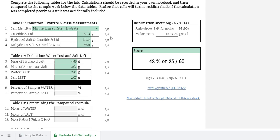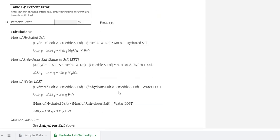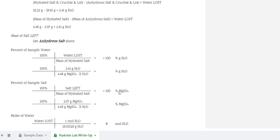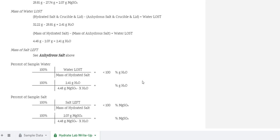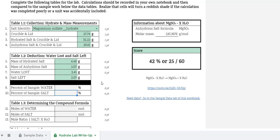This is part two of our hydrate lab. We're going to do the percent composition portion. We're going to use the total amount of hydrated salt, the amount of anhydrous salt left, and the amount of water lost in order to determine the percent that is water and the percent that is salt.